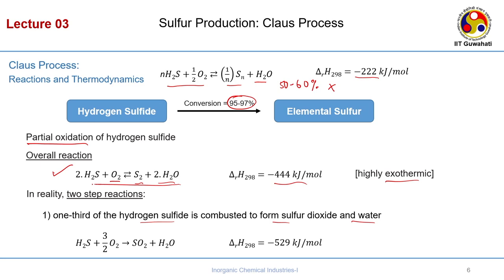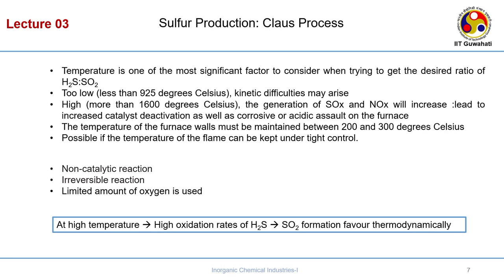Instead of going with a single overall reaction, this is broken into a two-step reaction. In the first step, one-third of the hydrogen sulphide is combusted to form sulphur dioxide and water, where delta H is minus 529 kJ per mole. The reason we go for the second step is that temperature is one of the most significant factors in getting the desired ratio of H2S to SO2.